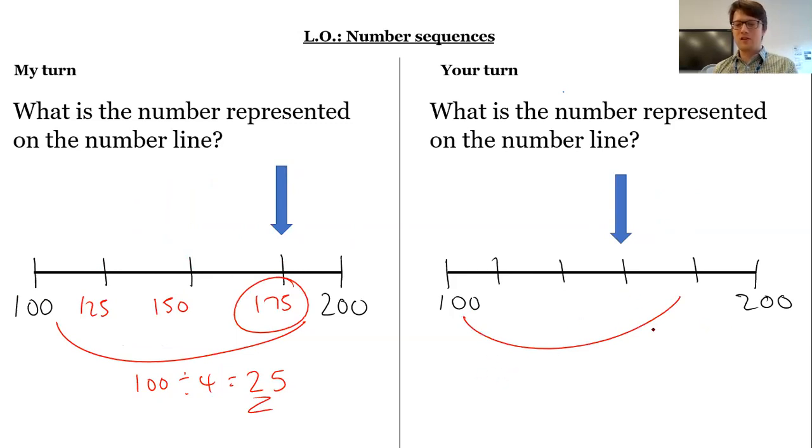So your turn. I've got a difference here of what? What am I dividing by? How many equal parts are there? And then what is the value of this arrow? Pause the video now, come back when you're done. So again, we can see 100 to 200. The difference is 100. I've got 1, 2, 3, 4, 5 equal parts. 100 divided by 5 is 20. So I'm counting in 20s, 140. So this blue arrow is pointing at the number 160.